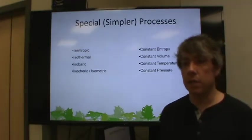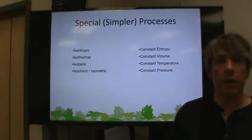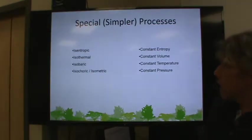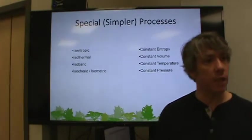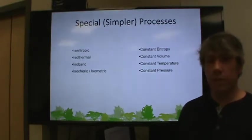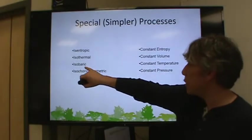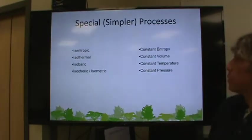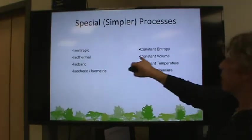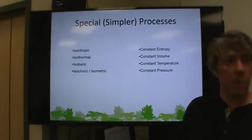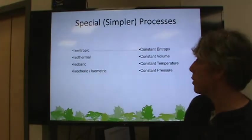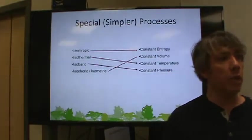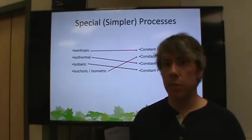There are simpler processes. There are processes where there are certain assumptions we can make that will simplify things a bit. There are isentropic, isothermal, isobaric, and isochoric or also called isometric processes. Let's see if we can play a matching game here. Which one goes with which? I think baric goes with pressure. So isobaric goes with pressure. The giveaway is that bar is a unit of pressure. Isothermal goes with temperature. Isochoric slash isometric goes with constant volume. And that leaves us with isentropic being constant entropy.